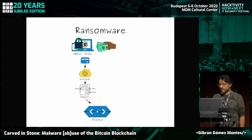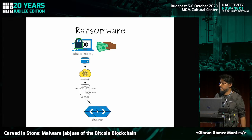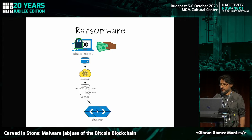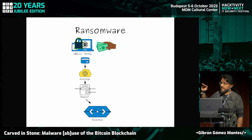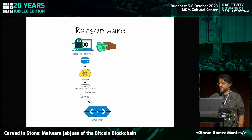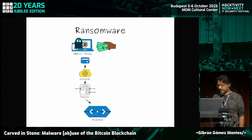Ransomware encrypts your data and makes you pay, producing a transaction on the blockchain to the ransomware gang's payment address. We will do analysis on these transactions produced by victims. These transactions are most probably produced through a service, because ransomware gangs are attacking people who most likely don't already have bitcoins — which will be important for the analysis.